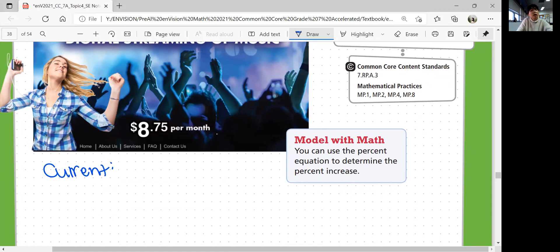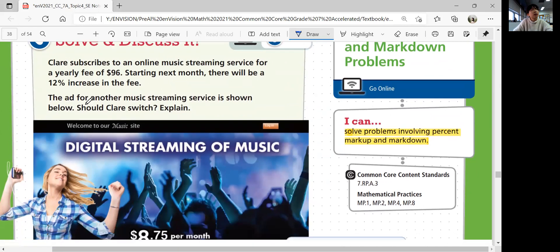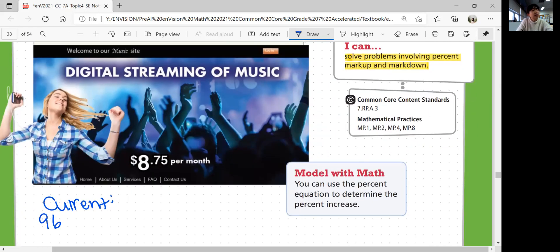So current plan, she has to get 12% of 96. What's 12% of 96? 96 times 0.12, because 12% is 0.12, is going to give you 12% of $96, which is $11.52. So her current plan is going to increase.